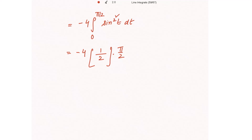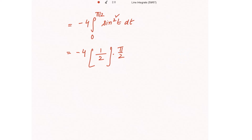Let me take one more example: for sin⁴(t) with limits from 0 to π/2, the reduction formula gives odd numbers in the numerator (3, 1) and even numbers in the denominator (4, 2), multiplied by π/2 for even power. Remember, for odd power you do not multiply by π/2, and the limits must be from 0 to π/2 to use this formula. Applying this, the 2s cancel, giving the required answer of -π.